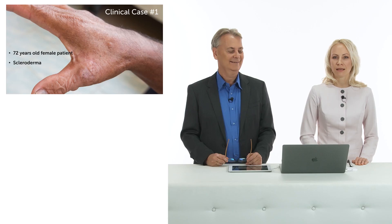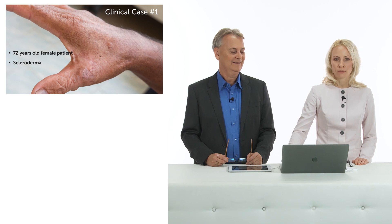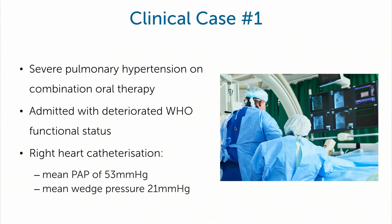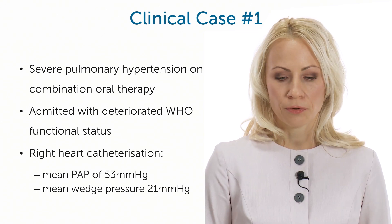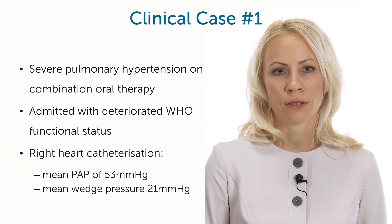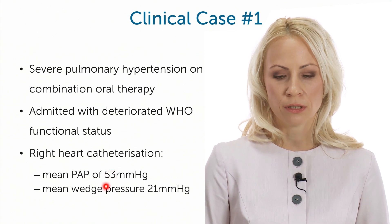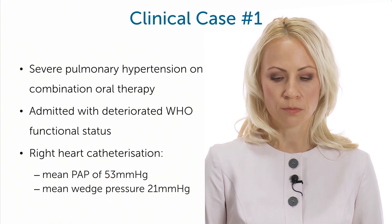Let me illustrate the added value of RV speckle tracking strain with a clinical case. This is a 72-year-old lady with a history of scleroderma. She has severe pulmonary hypertension and is already on combination oral therapy. She was admitted to the hospital with deteriorated functional status, and we performed right heart catheterization.